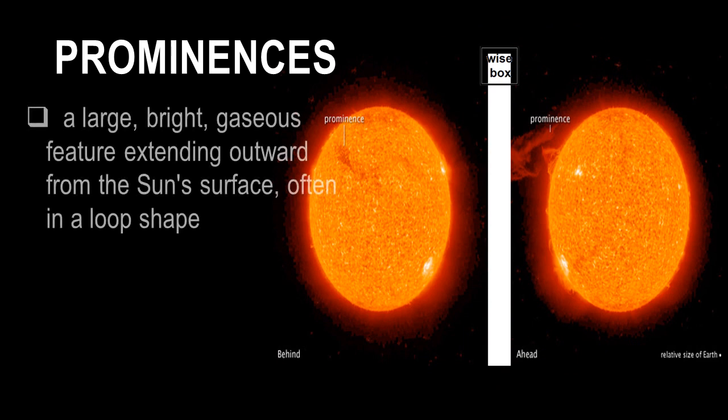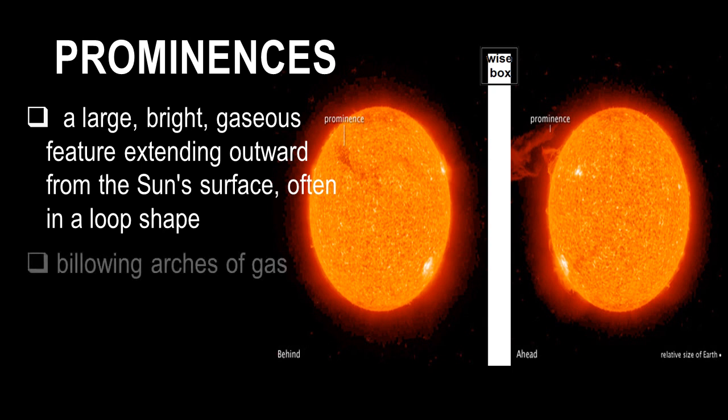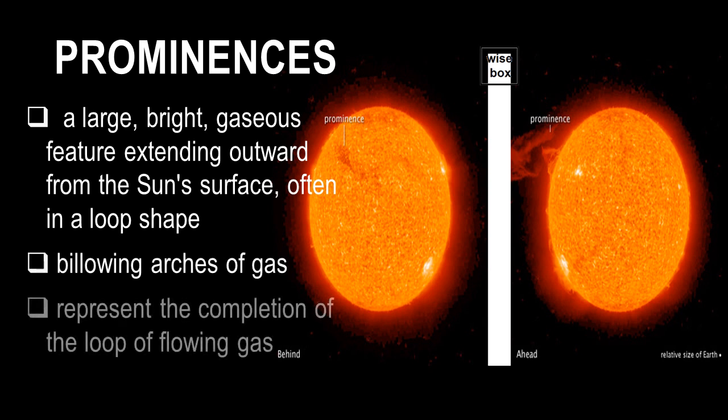Prominences are large, bright, gaseous features extending outward from the Sun's surface, often in a loop shape. These are seen as billowing arches of gas. These prominences represent the completion of the loop of flowing gas.